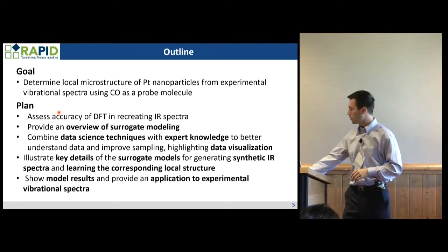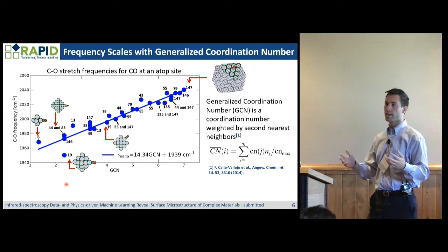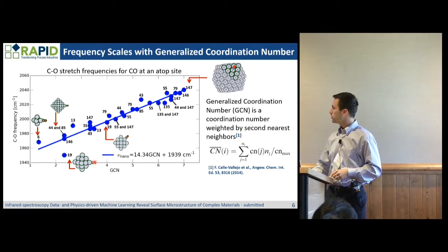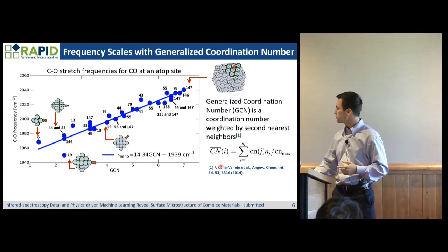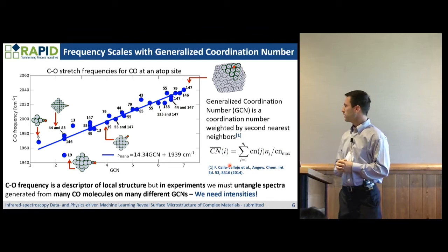Before, I showed you a scaling of the CO frequency against the coordination number. On platinum 111, every platinum atom on the surface is coordinated to nine atoms; in the bulk it's coordinated 12. As you get a more defected surface, that coordination number decreases. The CO frequency scales with what's called generalized coordination number, which we use because it provides more accurate results. It's essentially a weighted average of coordination number taking both the first and second coordination spheres, so it's a descriptor of local structure.